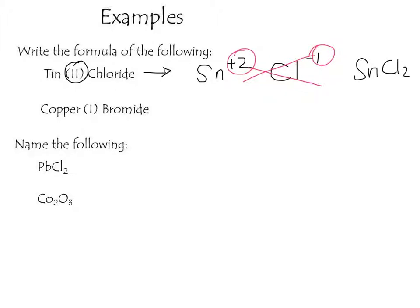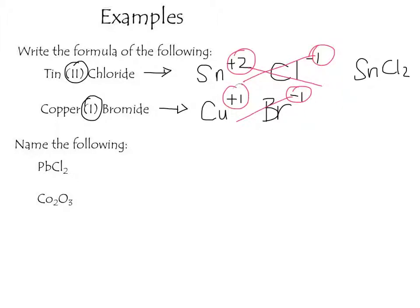For copper(I) bromide, copper is Cu with a plus 1 charge from Roman numeral 1. Bromide is bromine with a minus 1 charge from the periodic table. Applying the crisscross rule, we end up with CuBr.